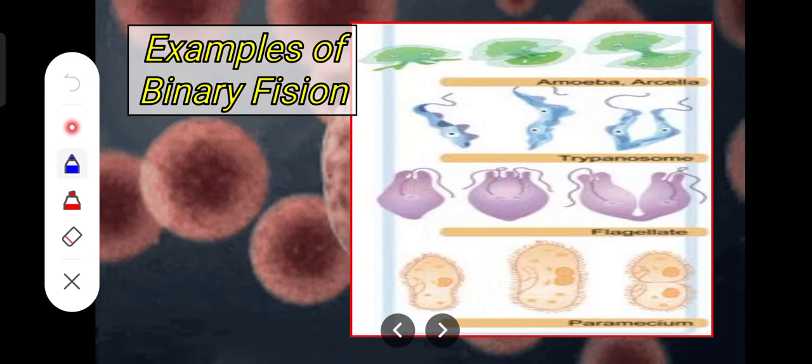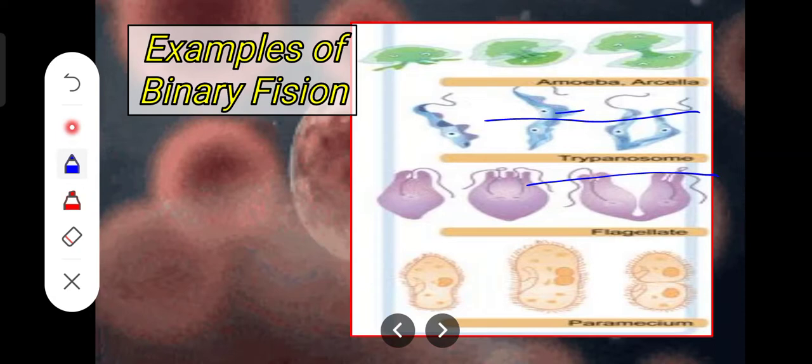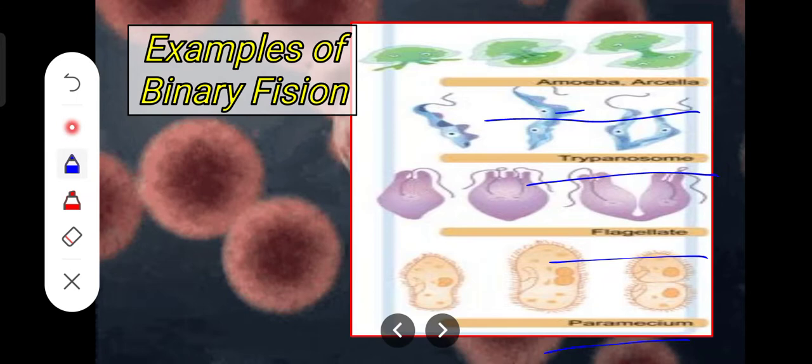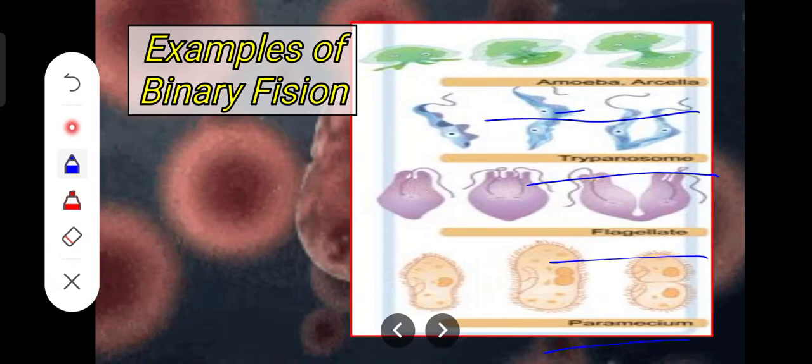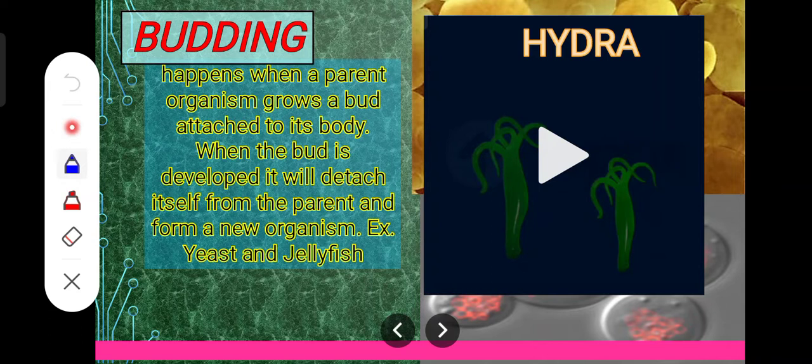Other examples of binary fission include amoeba, trypanosome, flagellate, and paramecium. As you can see, from one parent cell divided into equal parts, two new daughter cells are formed.